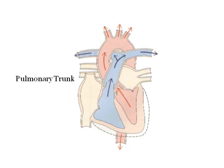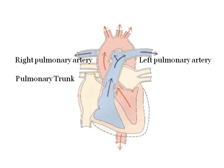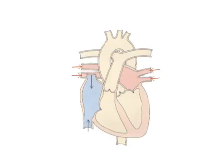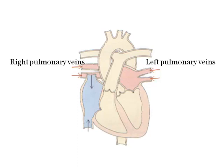Blood leaving the right ventricle enters the pulmonary trunk, the most prominent and anterior of the great vessels. The pulmonary trunk then abruptly splits into the right pulmonary artery serving the right lung and the left pulmonary artery serving the left lung. Blood enters the left atrium from the lungs through the pulmonary veins, while the right atrium receives blood from both the superior and inferior vena cava.